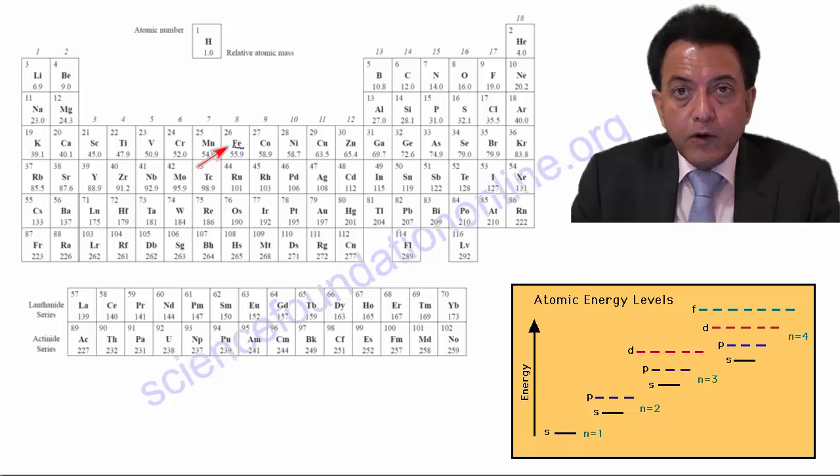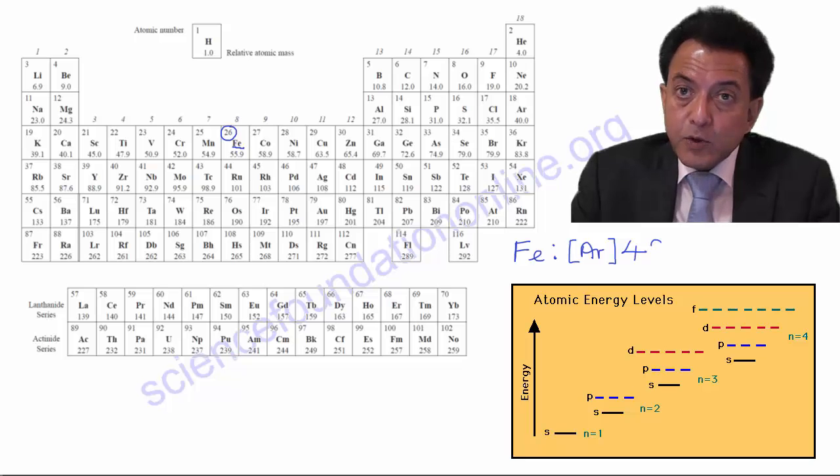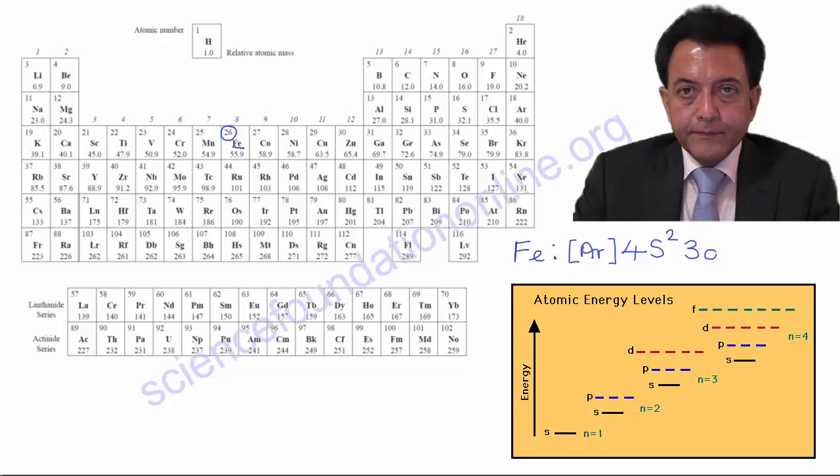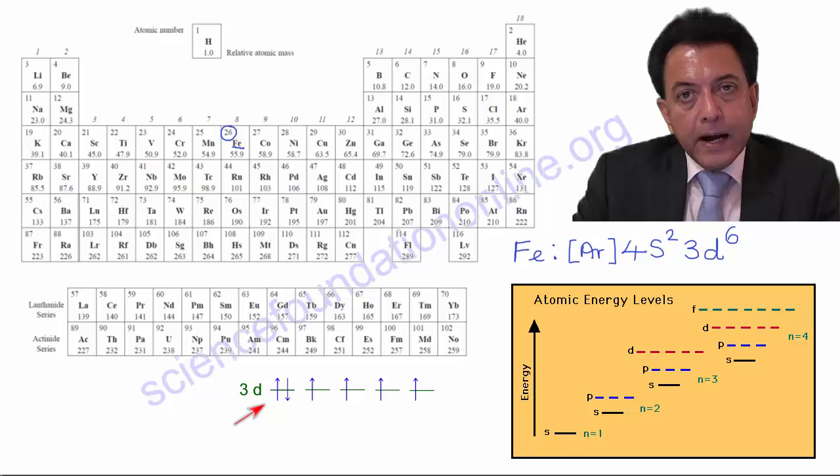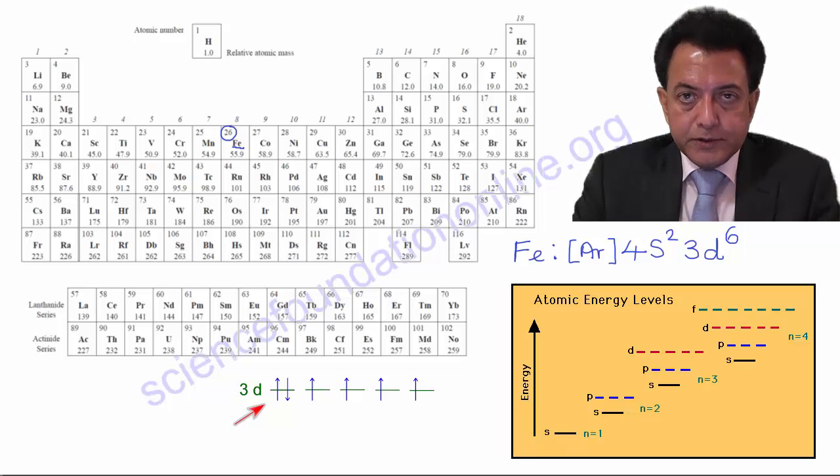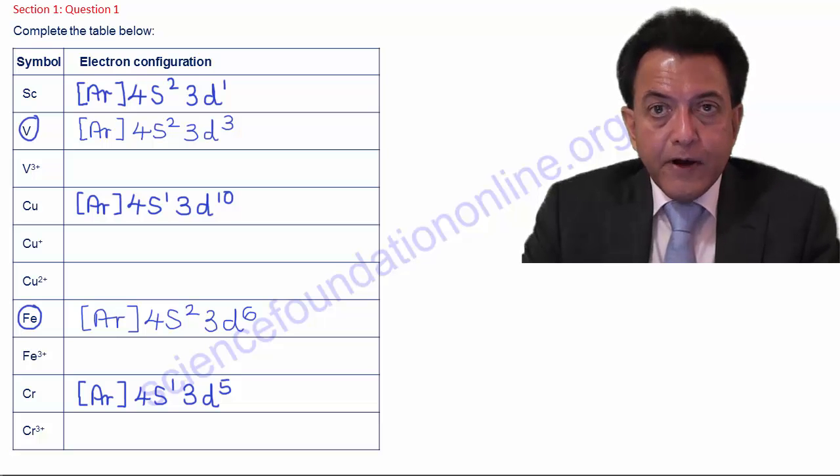Iron, with its atomic number of 26, has 26 electrons. Again, the first 18 electrons in the inner shells conform to the electron configuration of argon. Of the remaining 26 minus 18, 8 electrons, 2 will go into filling the 4s orbital. The remaining 6 electrons then occupy the 3d orbitals, with 4 of these 3d orbitals having only one electron, but one of the 3d orbitals will have 2 electrons. So, the electron configuration of iron is [Ar] 4s2 3d6.